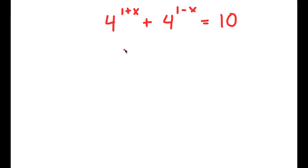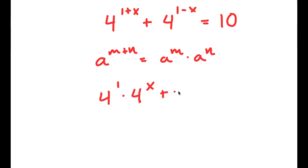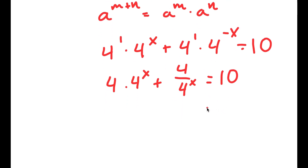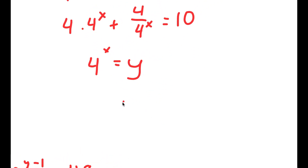In this problem, I have 4 to the power of 1 plus x plus 4 to the power of 1 minus x is equal to 10. Using the property that a to the power of m plus n equals a to the power of m times a to the power of n, I get 4 to the power of 1 times 4 to the power of x, plus 4 to the power of 1 times 4 to the power of negative x, equals 10. Now, 4 to the power of negative x is 1 over 4 to the power of x. I'm going to let 4 to the power of x equal y. So now I have 4y plus 4 over y is equal to 10.